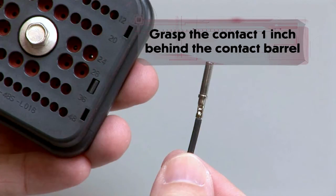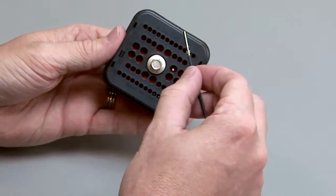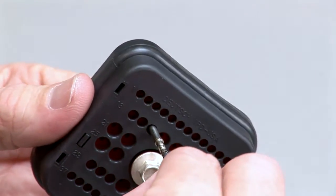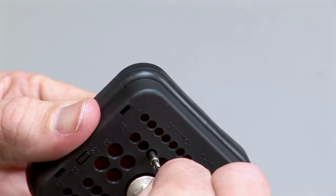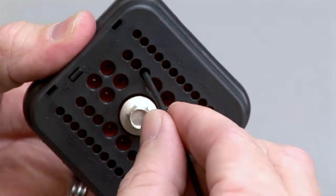Grasp the crimped contact approximately one inch behind the contact barrel. Hold the connector with the rear grommet or wire router cap facing you. Push the contact straight into the rear grommet until you hear and feel a click. A slight tug will confirm that the contact is properly locked into place.